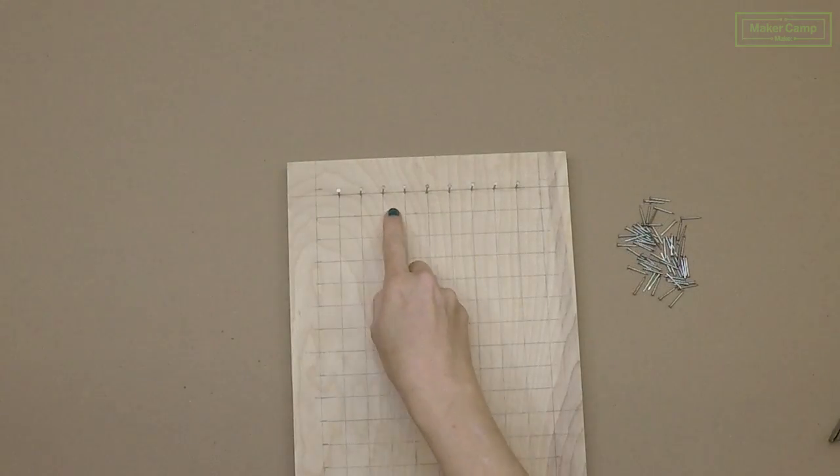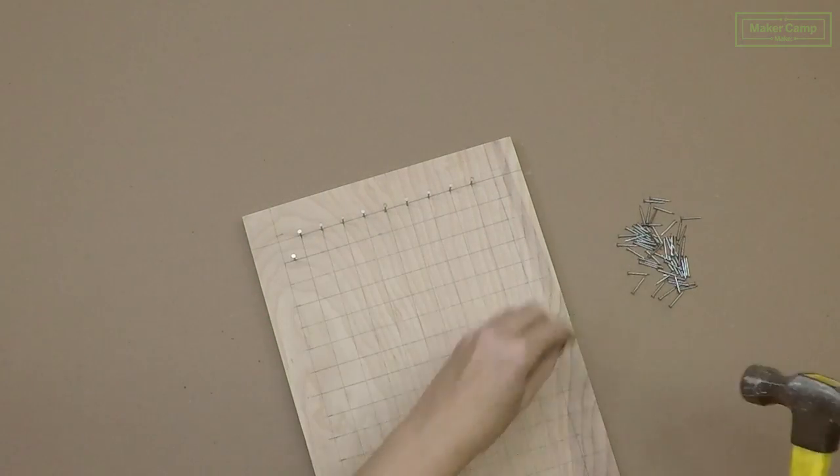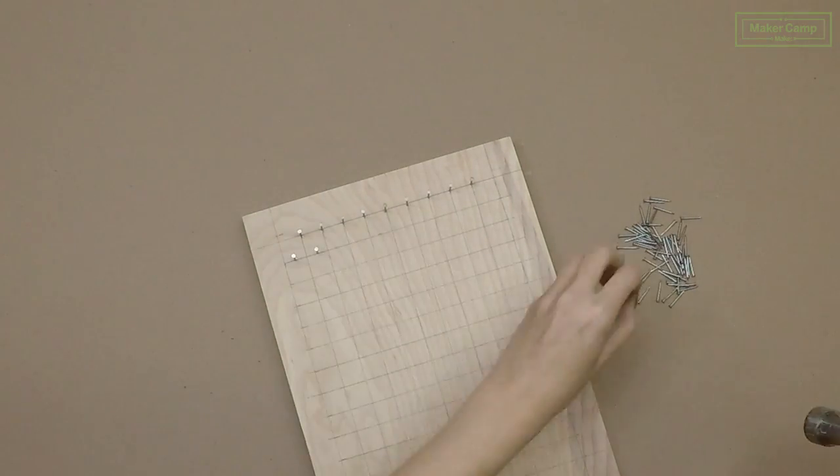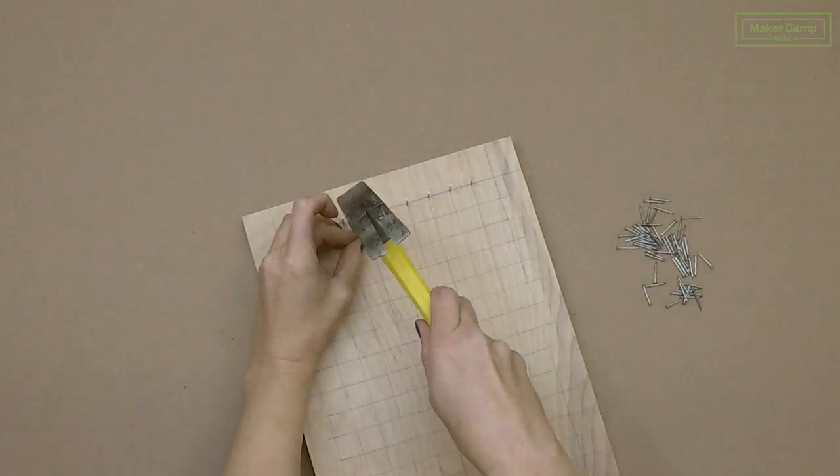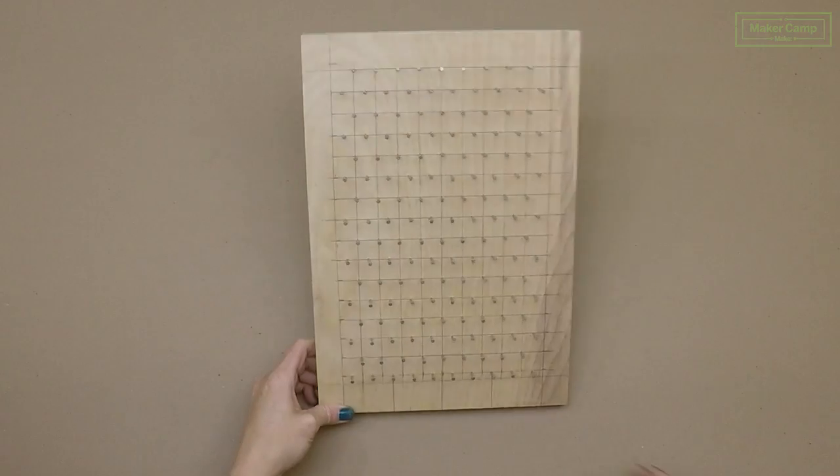The next row of nails is going to go in the middle of the squares. This alternating row helps the marble not go straight down. You're going to do this through the rest of the board alternating on the grid intersection in the middle of the square on the grid intersection in the middle of the square.